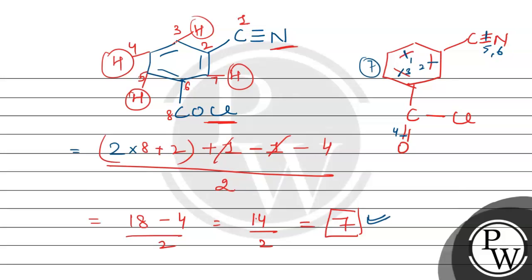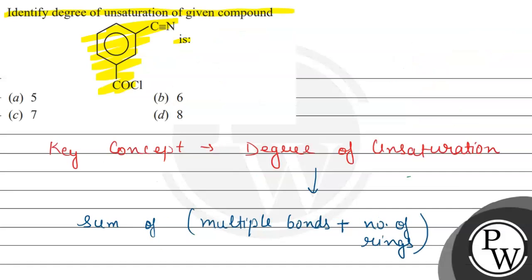And here we have seen that degree of unsaturation is seven only. By this, we can say the answer of this question will be option C. Let us mark option C as the correct answer. Option A, B, and D are incorrect. Hope you understood it well. Best of luck.